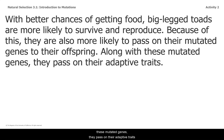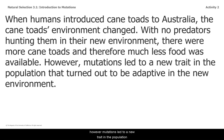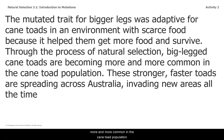Along with these mutated genes, they pass on their adaptive traits. When humans introduced cane toads to Australia, the cane toads' environment changed. With no predators hunting them, there were more cane toads and therefore much less food available. However, mutations led to a new trait — bigger legs — that turned out to be adaptive in the new environment. Through the process of natural selection, big-legged cane toads are becoming more and more common in the population, and these stronger, faster toads are spreading across Australia, invading new areas all the time.